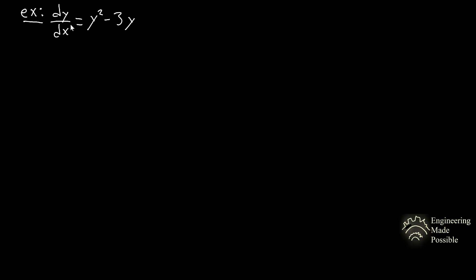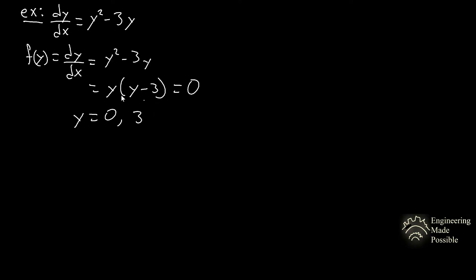For the next example, dy/dx = y² - 3y. This is an autonomous differential equation because the independent variable x does not appear in the function. The problem asks us to find the critical points and classify each as asymptotically stable, unstable, or semi-stable. Factoring gives y(y - 3) = 0, so the critical points are y = 0 and y = 3.